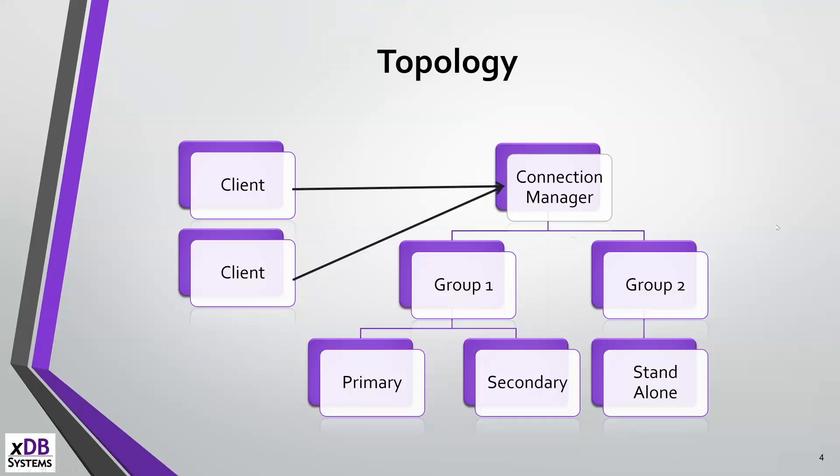The topology: you have clients that connect to the Connection Manager. The Connection Manager will have several groups of servers, and then, depending on the rules you provide, will route to whatever server you're telling users to go to. As a client, all you know is the Connection Manager — it does all the magic under the covers to get you to the server you really should be going to.